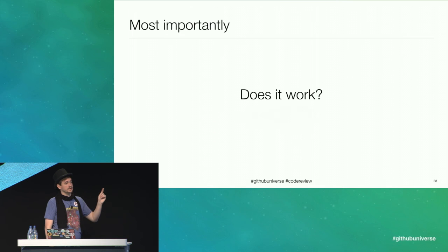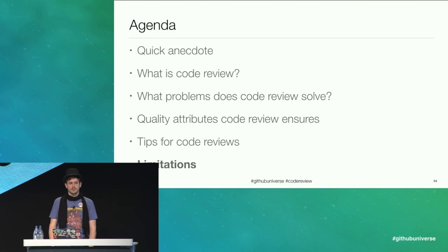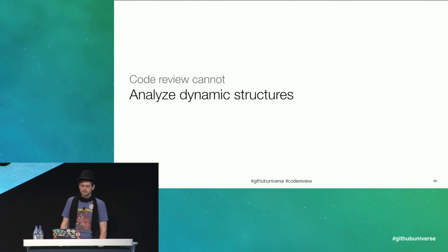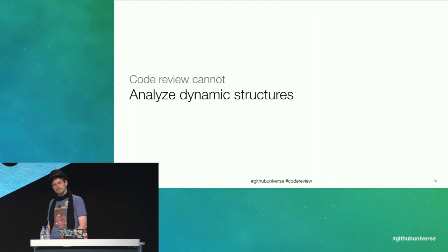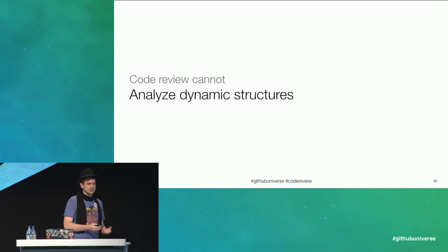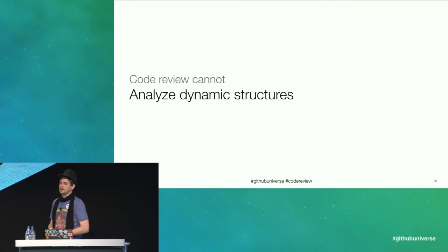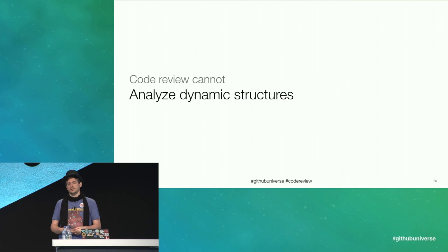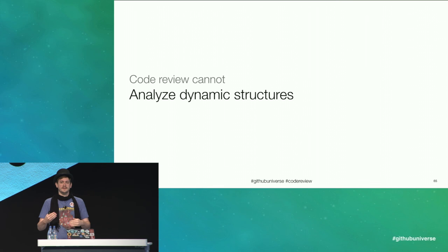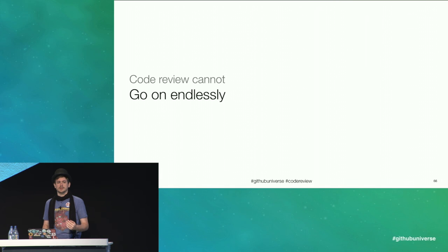Most importantly, does it work, and is it tested? Those are the things we care about most. Lastly, let's talk about some limitations of code review. Code review cannot easily expose how proposed changes affect the runtime environment. Reviewers are certainly encouraged to download and execute the code, run the tests, and see how it works on their own machine, but doing this too often can significantly slow down the reviewer. They're better off pairing together with the submitter to say, hey, let's run the tests in your environment. Those environmental issues should be caught in your regression builds or continuous integration system.